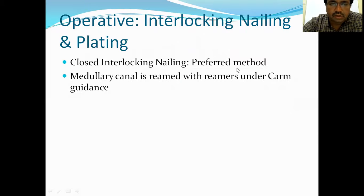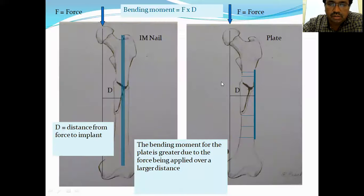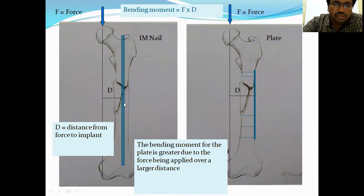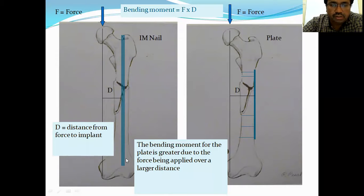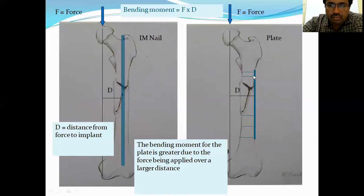When TEN nails are not sufficient, we perform interlocking nailing — this is the preferred method. The medullary canal is reamed under C-arm guidance, the intramedullary nail is passed, and interlocking screws are placed at the upper and lower ends. This is called the interlocking intramedullary nail. Plating is another treatment option where we apply a plate with screws to stabilize the fracture.